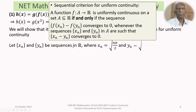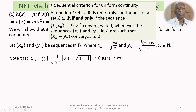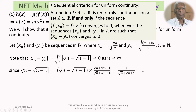Let Xn = √(nπ/2) and Yn = √((n+1)π/2), where n is a natural number. Note that |Xn − Yn| = √(π/2) · |√n − √(n+1)|. Rationalizing, |√n − √(n+1)| = 1/(√n + √(n+1)), which tends to 0 as n → ∞. Therefore Xn − Yn → 0 as n → ∞.